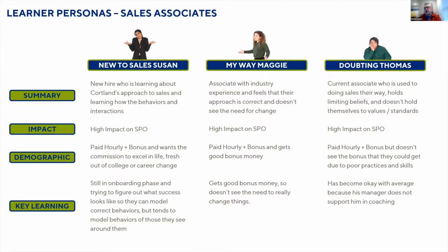We also realized that we have My Way Maggie. Maggie is a long-term salesperson who's been around the industry and she thinks and feels that the way she approaches sales is totally fine and she doesn't want to change. And then we also have Downey Thomas, who is the type of person who joined the company but has not really embraced any of the behaviors or interactions we're asking him to do, and has seemed to be okay because his manager doesn't really support coaching and developing him.